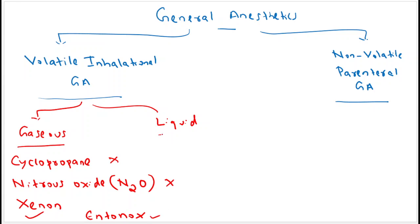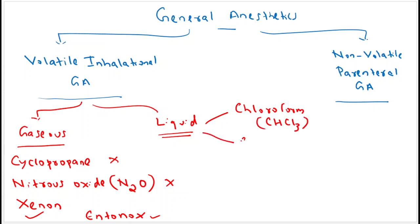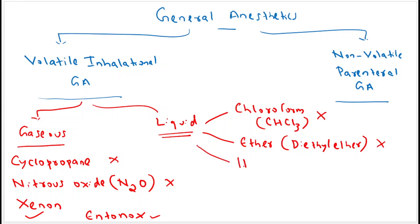In the liquid volatile inhalational general anesthetic category, the examples include chloroform (CHCl₃) and ether compounds — the main example being diethyl ether. Both chloroform and diethyl ether have general anesthetic properties; however, they are not used clinically.